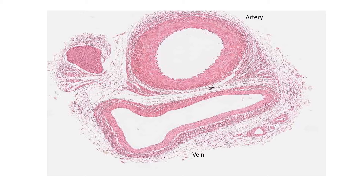The top vessel is the artery. It has by far a thicker wall to withstand the greater pressures. The bottom one is the vein.